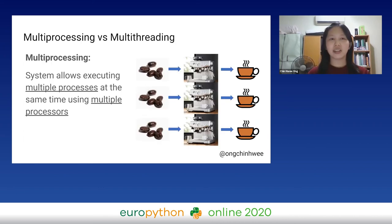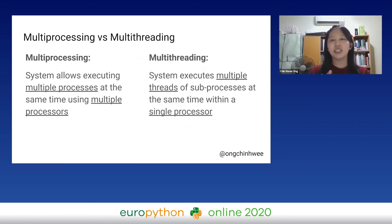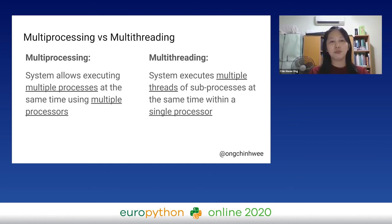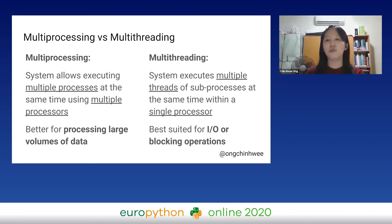What's the difference between multi-processing and multi-threading? Multi-processing allows multiple processors running at the same time. Multi-threading means the system executes multiple threads of sub-processes at the same time within a single processor. The difference is multiple processors versus a single processor. Multi-processing is better for processing large volumes of data, while multi-threading is best suited for I/O or blocking operations.